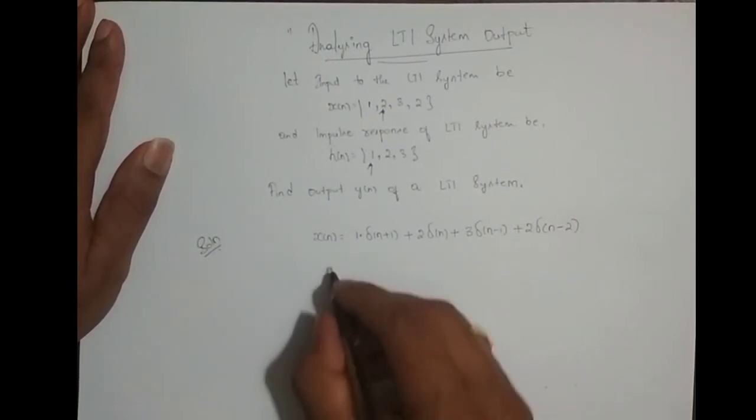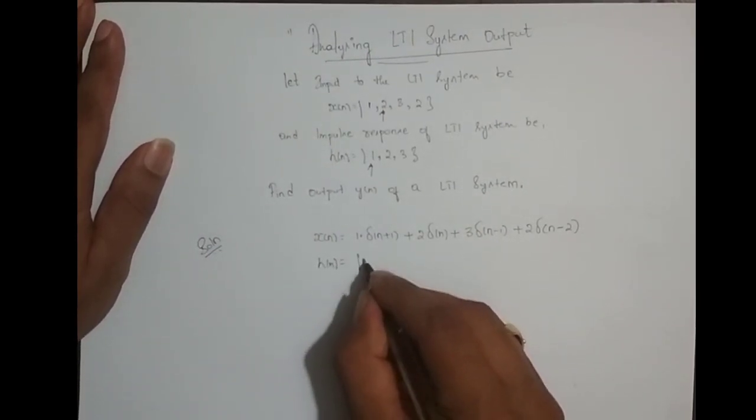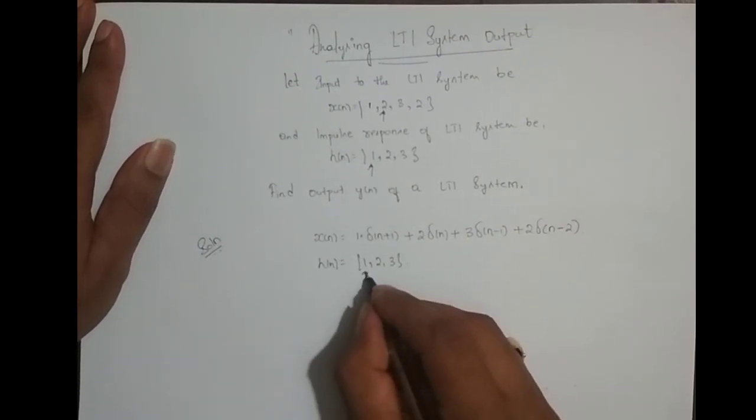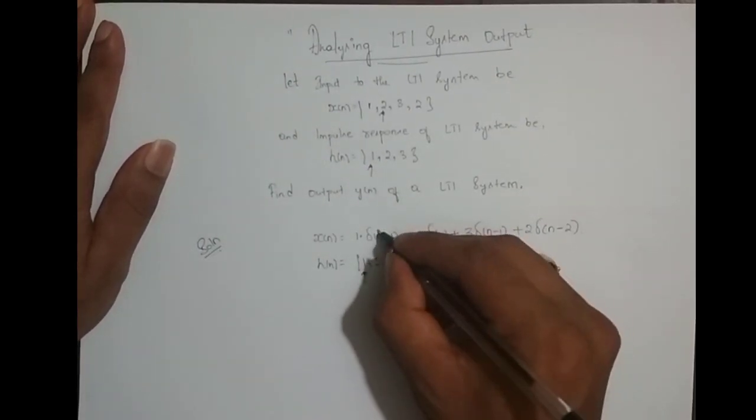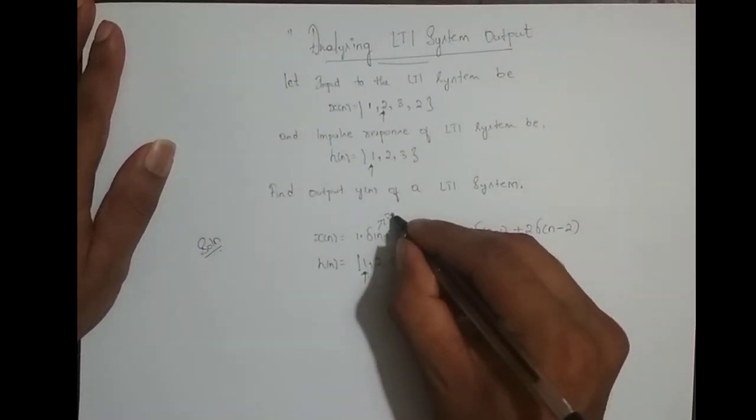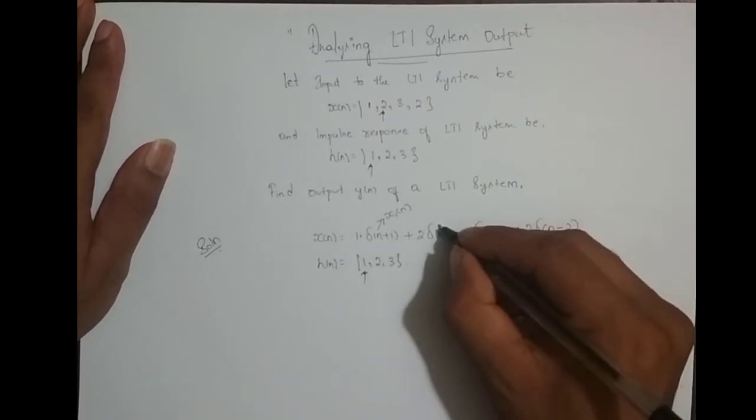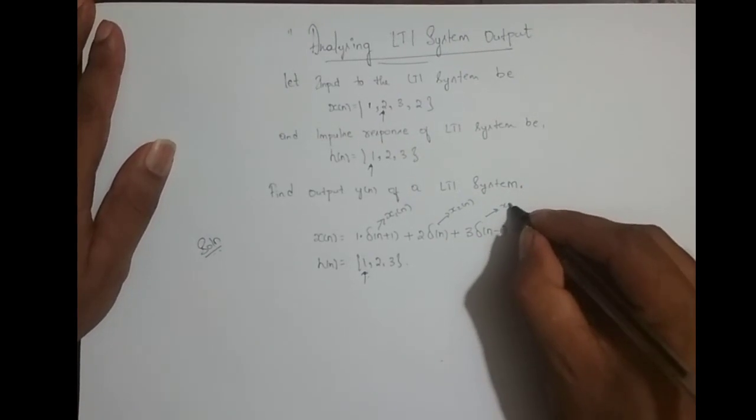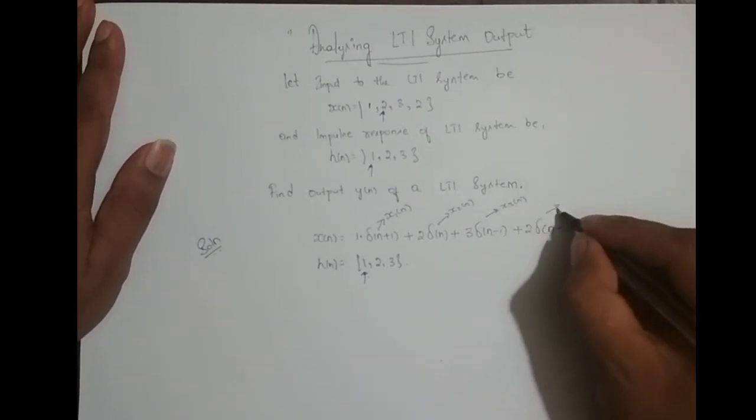And we retain h(n) as it is. h(n) is 1 comma 2 comma 3. And we call this as x1(n), we call this as x2(n), we call this as x3(n), and we shall call it as x4(n).